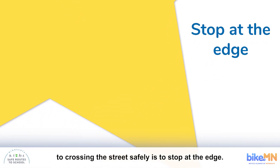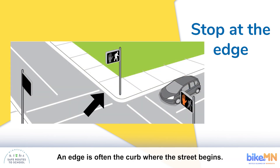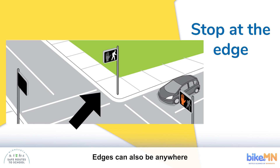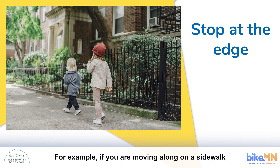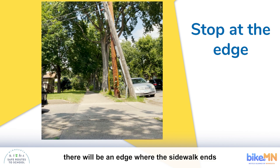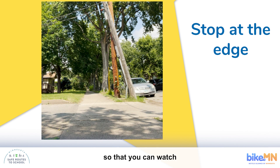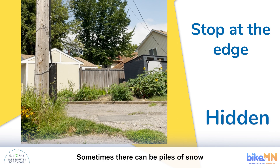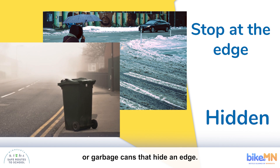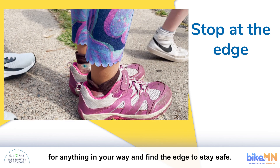The second step to crossing the street safely is to stop at the edge. An edge is often the curb where the street begins. But edges can be tricky — they can also be anywhere a vehicle can cross your path. For example, if you are moving along on a sidewalk and you come to a driveway or alley, there will be an edge where the sidewalk ends and the alley or driveway begins. Stop at these edges too so that you can watch for traffic. Edges can also be hidden by piles of snow or garbage cans, making it harder to find the edge and for drivers to see you. Be careful to find a safe place where you can look for anything in your way.